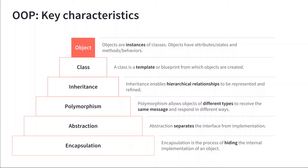This layering concept is key to object-oriented programming. On top sits the class, which is basically a template or blueprint for what objects are. Objects are instances of classes. Think of a class as a blank form with all the questions and none of the answers, and an object as a filled-in form. You could give a whole classroom the same questionnaire and get back many filled-in versions with different answers — that's the relationship between class and object.